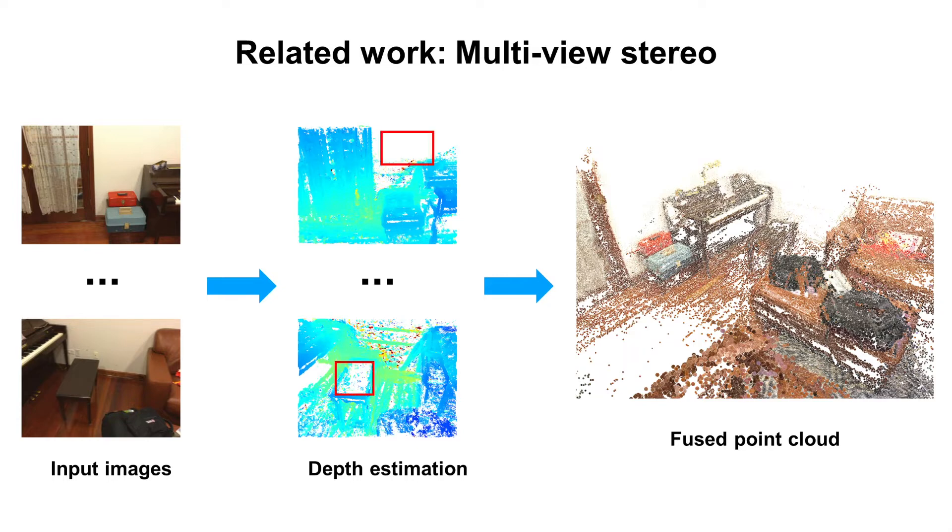While these methods have shown great results under ideal scenarios, they have difficulty in reconstructing low-textured, specular and reflective regions. Because these regions make dense matching intractable and thus lead to incomplete reconstructions.